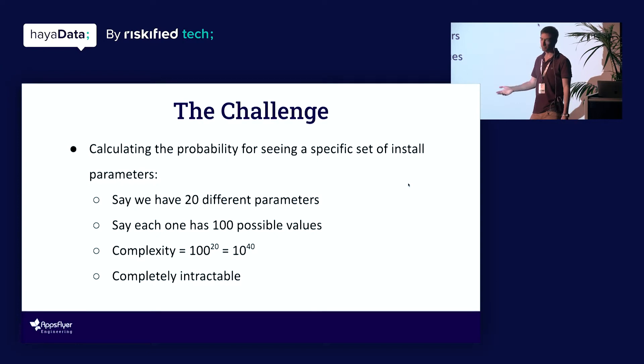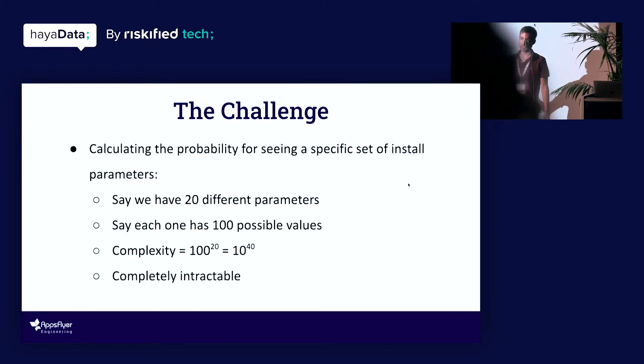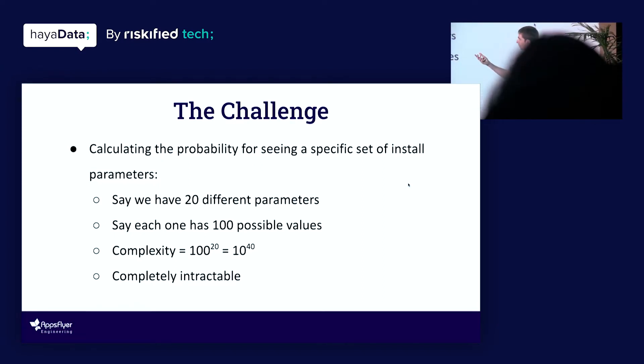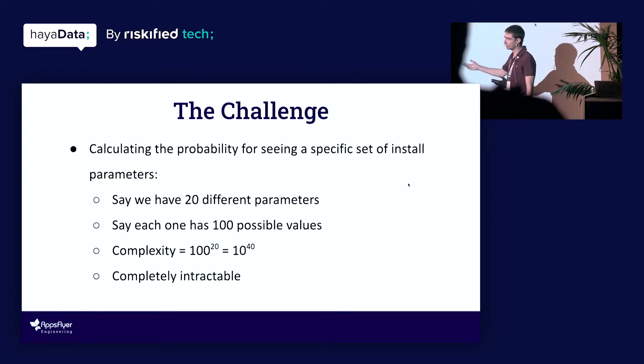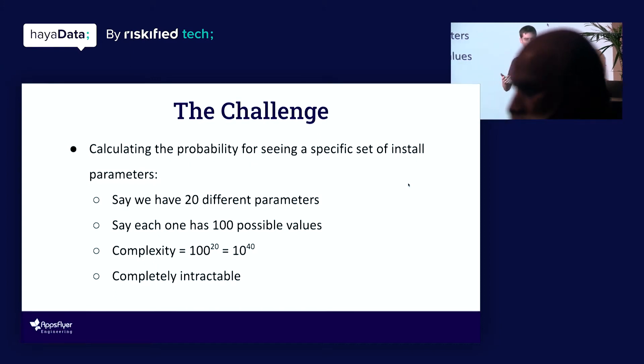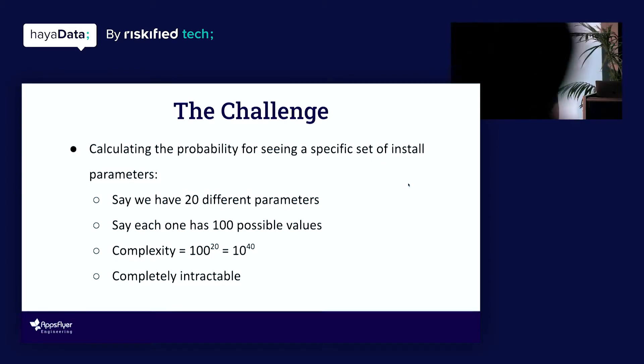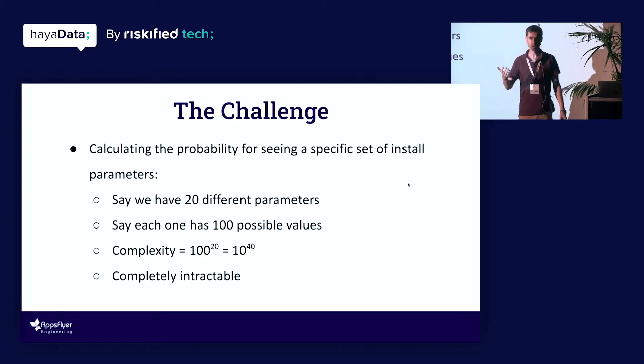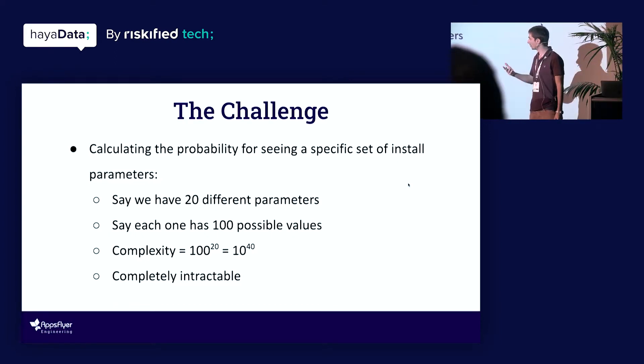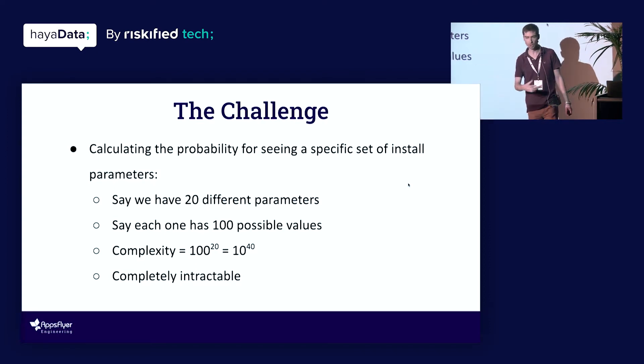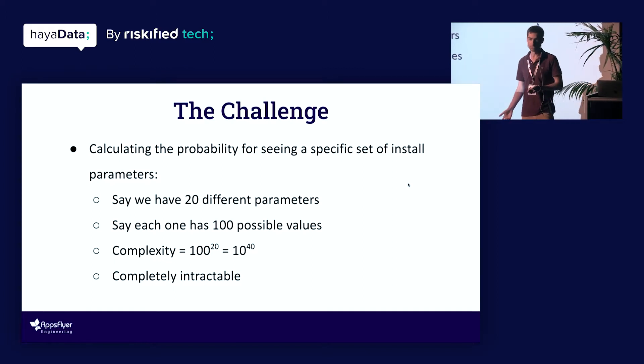So why is that even difficult? Assume, for example, that we have 20 different parameters. Take parameters like the country or the language of the device from which the install came. There are many countries in the world, more than 100, many languages and many all sorts of technical parameters about the device that tend to be categorical variables and also tend to have a lot of possible values. So the number of combinations that we're going to get from all these different variables is going to be something like 100 to the 20 in this example, which is 10 to the 40. My point is it's going to be a big number dealing with all these combinations. So we can't really expect to find all these combinations within our existing data. We can't model every such combination individually. And we also can't deal with it from a computational perspective or from either from runtime or memory complexity. It's just too high of a number.